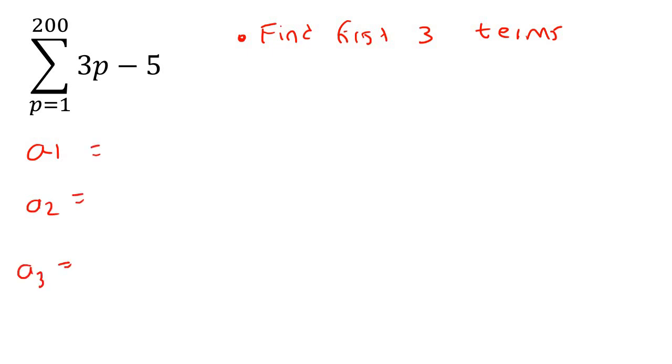So how do we find term one again? You start with whatever this number is. In this case, it's a one. It's not always a one like we've seen before. So go plug that in, and that is negative two.